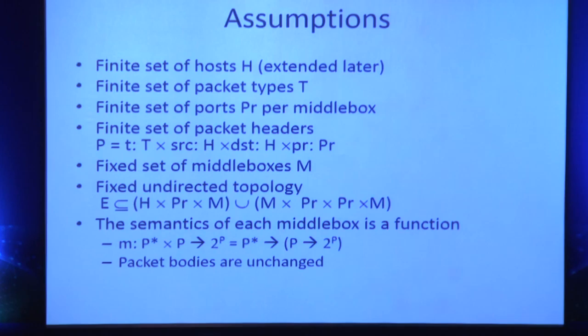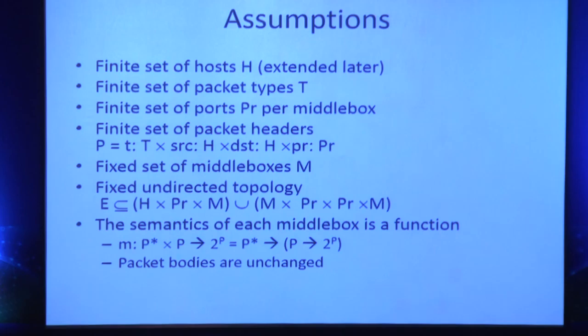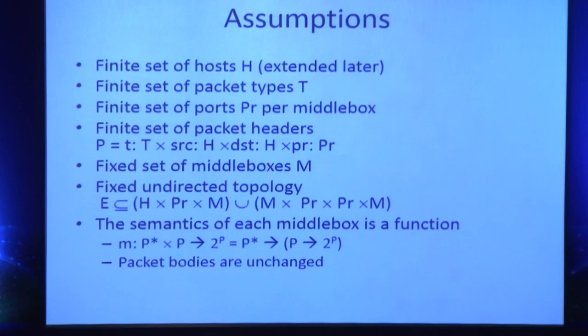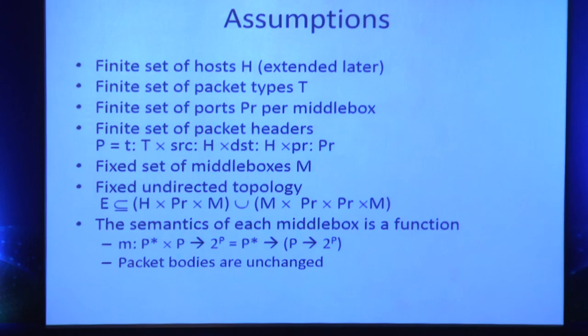The topology is just an undirected graph. The interesting part is how we model middle boxes: we model them as functions that take the history and the current packet and forward to a set of ports. As a higher-order function, it maps history to a function from port to port. At any point in time, depending on the history, the forwarding behavior of the middle box will be different — as we saw in the stateful firewall and cache. We assume the packet body is unchanged; we only manipulate headers.